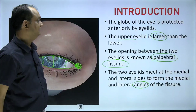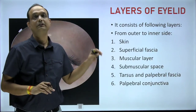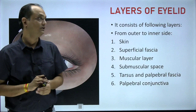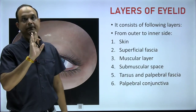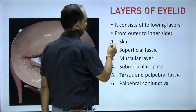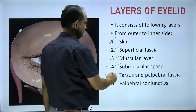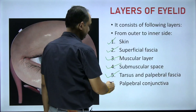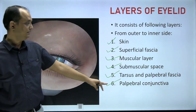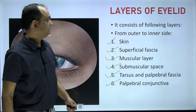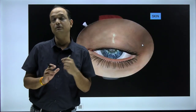Now the very important part: the layers of the eyelid from superficial to deep are skin, superficial fascia, muscular layer, submuscular layer, tarsal plate and palpebral fascia, and lastly the innermost layer is conjunctiva. In this video clip you can appreciate these layers to get an orientation.